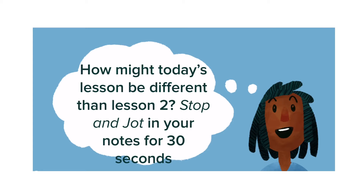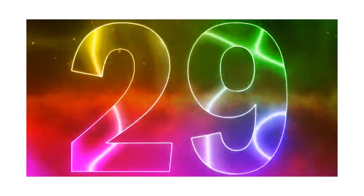In the last lesson, we learned how to find the area of a right triangle. Today, we're going to find the area of acute triangles. So take 30 seconds in your notebook and we're going to do a stop and jot. You're going to answer the question: how might today's lesson be different than lesson two?